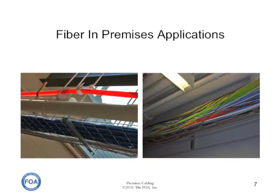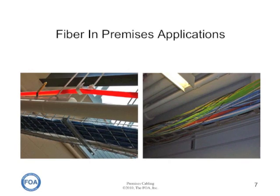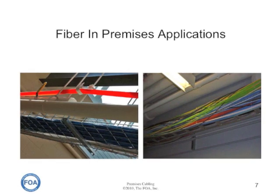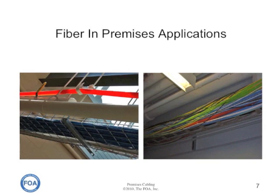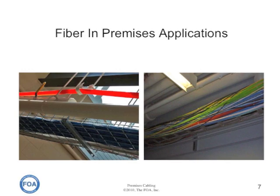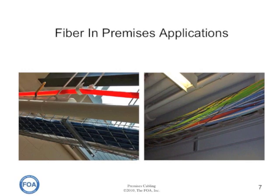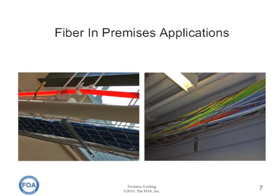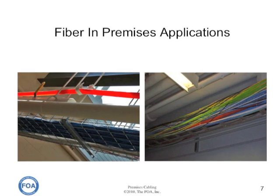When installed, fiber is often mixed in with copper cabling, as you can see in these two pictures. When it is, it's often run not just as a cable laid in a cable tray with other cables, but is put in inner duct, which is used to protect the fiber optic cable from the heavy weight of all the copper cables around it.